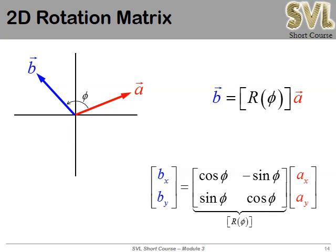In two dimensions, the rotation matrix is the 2×2 matrix: [[cos φ, −sin φ], [sin φ, cos φ]]. In three dimensions, we take those same four elements and distribute them in a 3×3 matrix. In Cartesian coordinates there are three axes to rotate about. Rotating about the x-axis leaves x unchanged and rotates in the y-z plane. Rotating about the y-axis rotates in the x-z plane. Rotating about the z-axis rotates in the x-y plane. Each case distributes the cosine and sine terms appropriately in the 3×3 matrix.